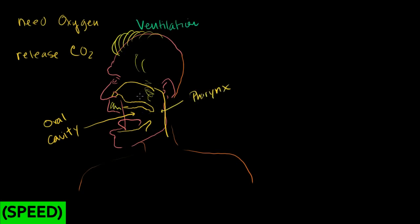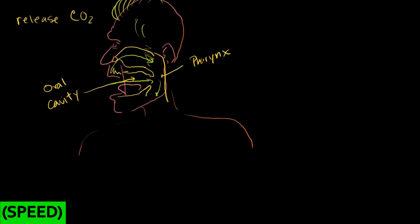Breathing through your nose is considered better, probably because the air gets filtered by nose hairs and warmed up. But you can breathe through either side. Air goes in through your nasal cavity or oral cavity and comes back through the pharynx. The pharynx then splits into two pipes — one for air and one for food. In the back you have your esophagus, and in the front you have your larynx. I'll draw a dividing line — this right here is your esophagus.